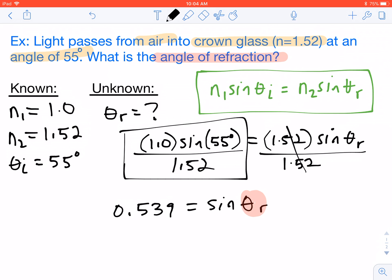So to get theta r all by itself, what we're going to do is we're going to take the inverse sine function. So it looks like this, sine to the negative 1. There is a particular button on your calculator where you can just hit the inverse sine function. And we're going to take the 0.539, take the inverse sine of that. That is what's going to give us our angle measurement. So in this case, our angle measurement comes out to be 32.6 degrees.